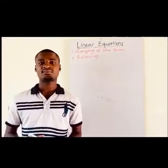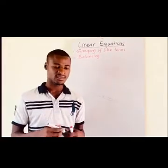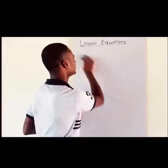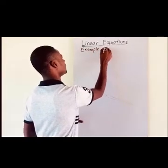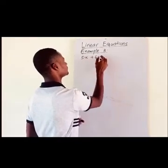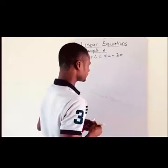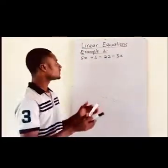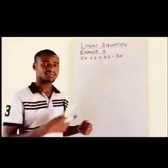Let's take our third example, which will be a bit more complex than examples 1 and 2. In this example, we have a variable at the left hand side and at the right hand side. We also have numbers at the left hand side and at the right hand side.